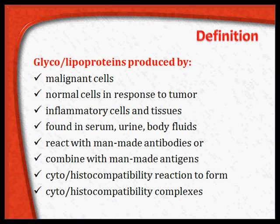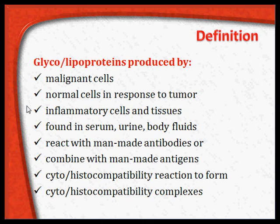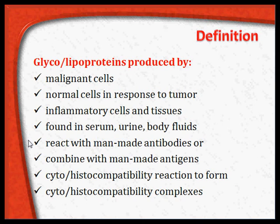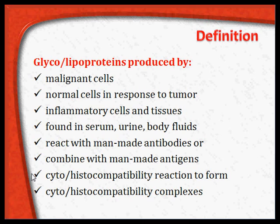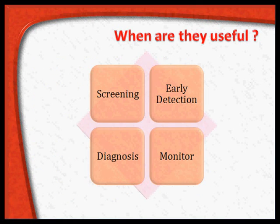The tumor markers are either glycoproteins or lipoproteins produced by the tumor cells themselves, or by the host cells, or by normal cells in response to the tumor, or they may be products from the inflammatory cells and tissues in which the tumor is present. They are found usually in the serum, sometimes in the urine and other body fluids. These tumor markers react with man-made antibodies or combine with man-made antigens, giving rise to antigen-antibody reactions and complexes which can be detected by various methodologies, or cytohistocompatibility reactions may form cytohistocompatibility complexes which can also be detected by different mechanisms.